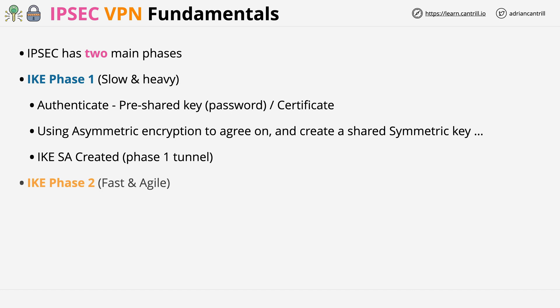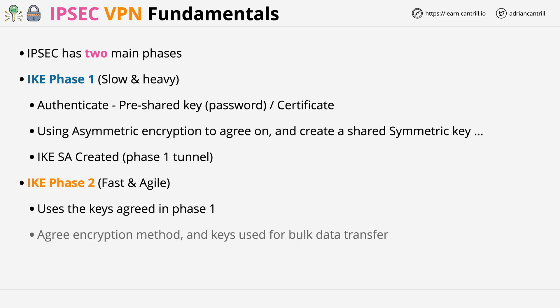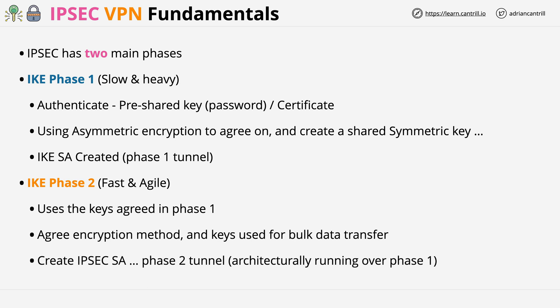IKE Phase 2 is faster and much more agile, because much of the heavy lifting has been done in Phase 1. The Phase 1 keys are used as a starting point for Phase 2. Phase 2 is built on top of Phase 1 and is concerned with agreeing encryption methods and the keys used for the bulk transfer of data. The end result is an IPsec security association — a Phase 2 tunnel running over Phase 1. Phase 1 can remain established while a Phase 2 tunnel is created, used, and torn down, making re-establishment much faster.